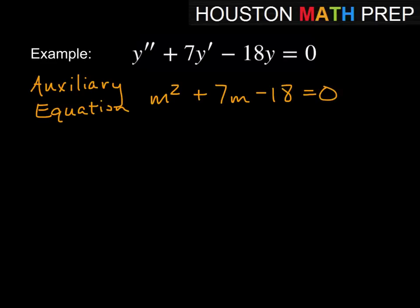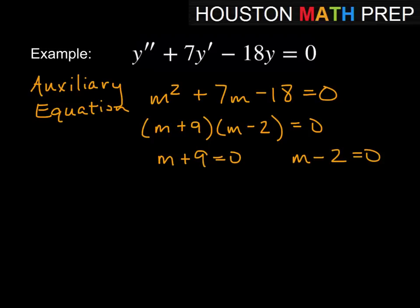And we could solve this by factoring. So here this will give us (m + 9)(m - 2), so we assume that you're still good at the factoring business, equal to 0. And then when we set each of these factors equal to 0, then we get answers, so our first m value is going to be -9, and our second m value is going to be 2.